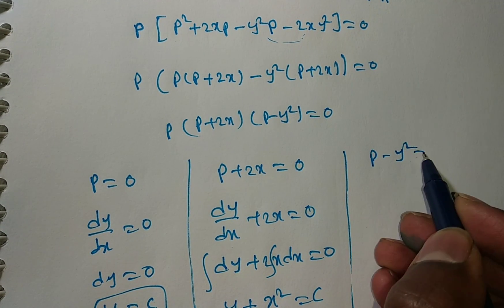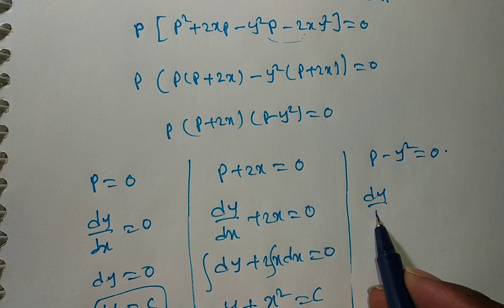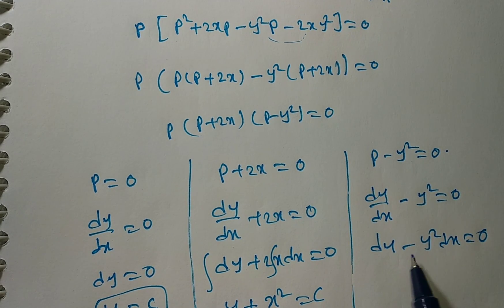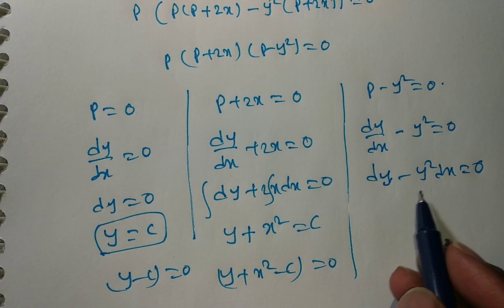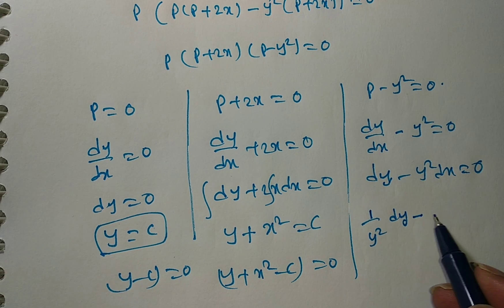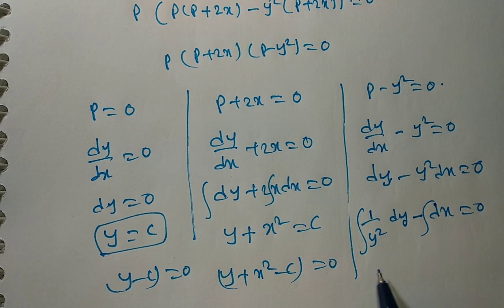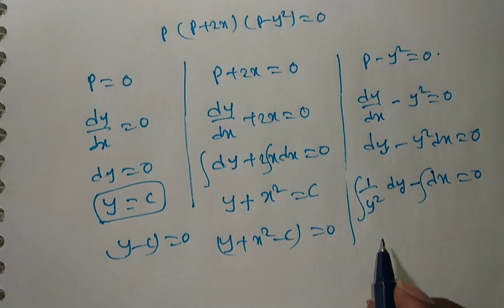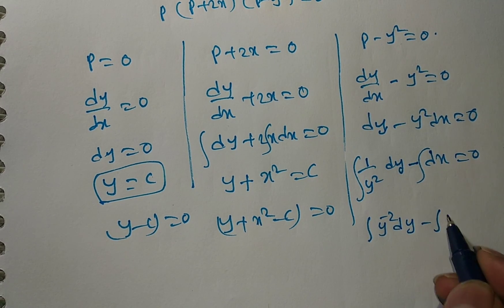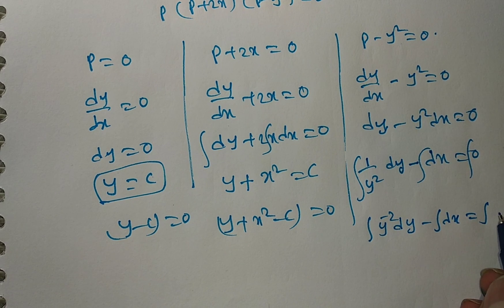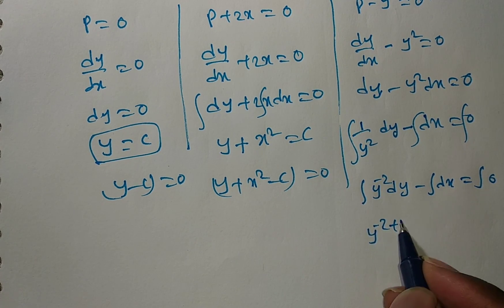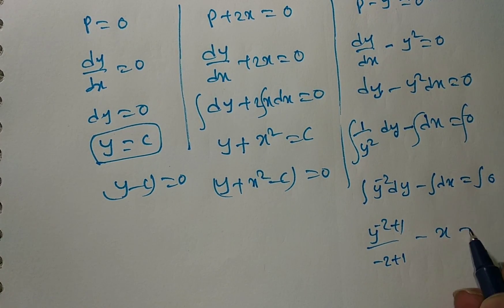Third factor: p minus y squared equals zero, so dy/dx equals y squared. Rearranging: dy minus y squared dx equals zero. Cross-multiplying: 1/y squared dy minus dx equals zero, or y to the power minus 2 dy minus dx equals zero. Integrating: y to the power minus 1 divided by minus 1, minus x equals c.